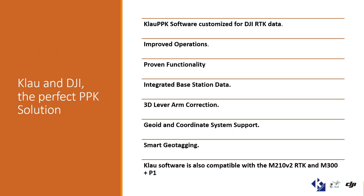An added benefit of the Cloud software is that it supports different geoid and coordinate system support. You can use any of the local coordinate systems that you wish — you can update your own local coordinate systems, or use existing ones like MGA55. You can also use AUSGEOID or any well-known geoid or coordinate systems. With the end result, we can choose to either geotag the images on the EXIF data or create a CSV file with all the stored PPK data.